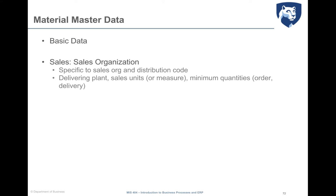Examples of sales organization data include the delivering plant, sales units, and minimum quantities. The delivering plant is the preferred plant from which deliveries are made for a particular sales organization and distribution channel. Sales units are the unit of measure — like barrels, containers, cases, pallets — in which the materials are sold. Quantities include minimum order quantities and delivery quantities, and there is also a link to pricing conditions.